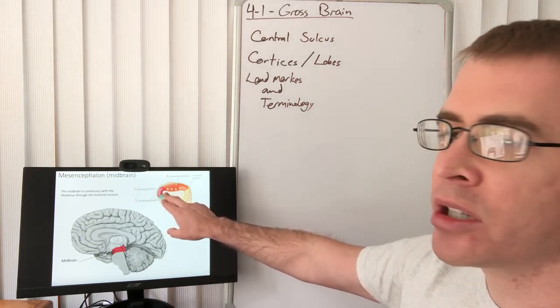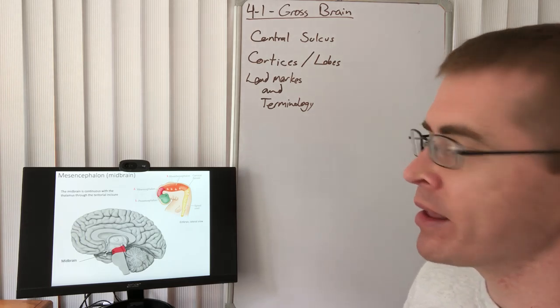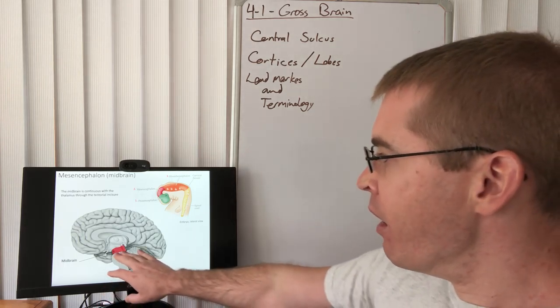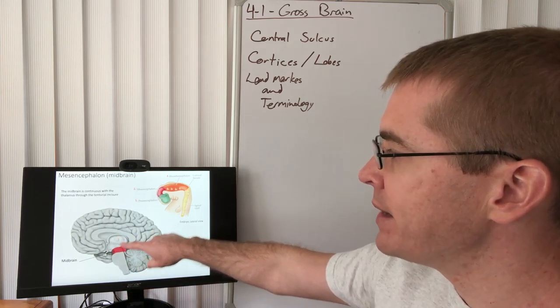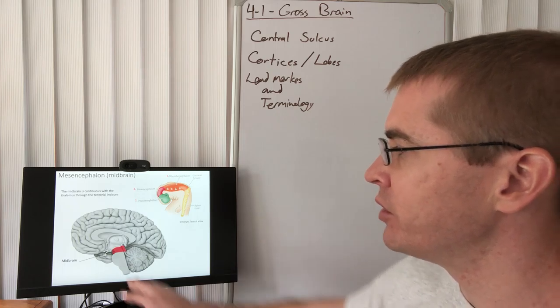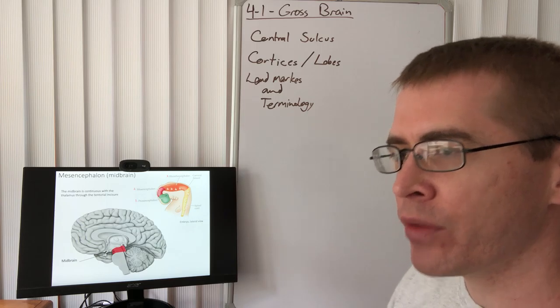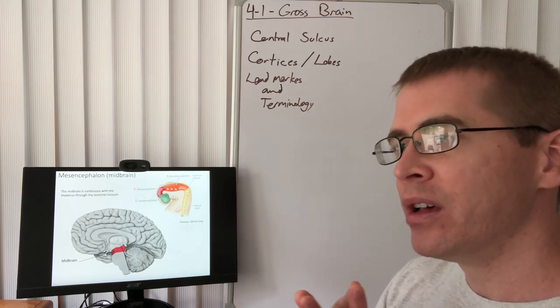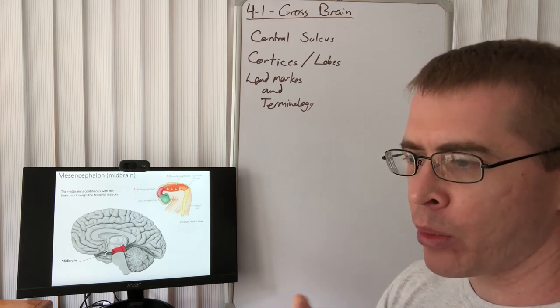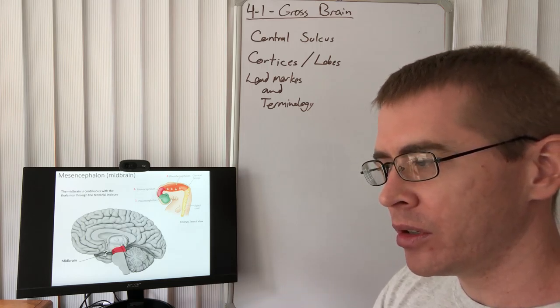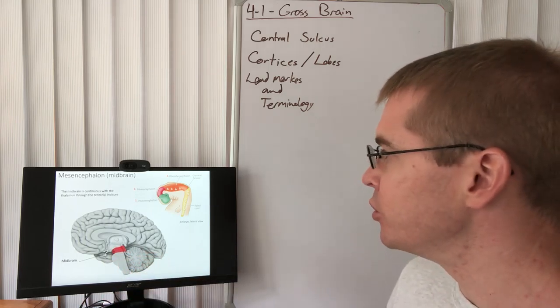Now, heading posteriorly, we have the mesencephalon, the middle portion of the embryonic brain, and that becomes the midbrain. So the midbrain is the portion that connects the diencephalon to the rhombencephalon, to the pons and the lower portions of the brainstem. So there are some important features in there. We've already learned about some pathways that travel through the midbrain, pathways like the corticospinal tract that goes down to form the pyramids in the medulla.